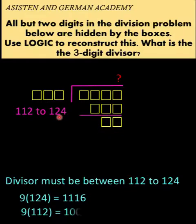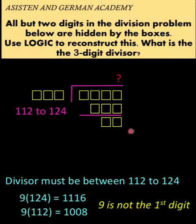Let's take the lower limit of the divisor, 112. Nine times 112 gives us another four-digit number, 1,008. But we want a three-digit number. So that means nine cannot be this question mark. So we can now rule out nine as our candidate for the value of this question mark.